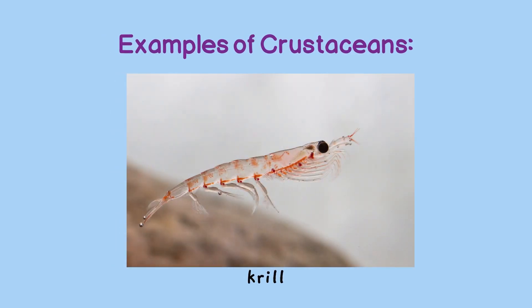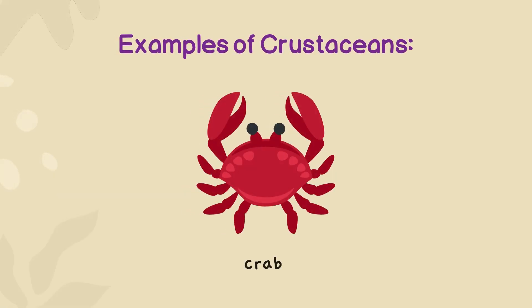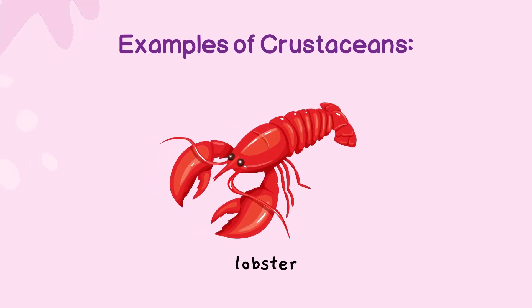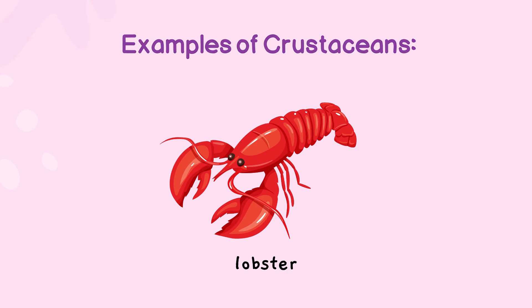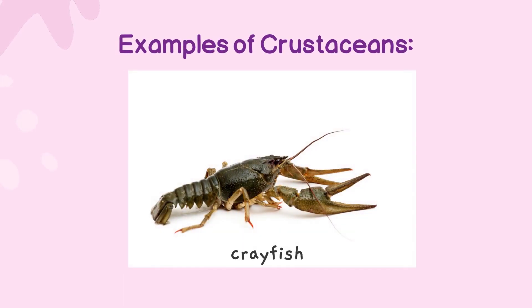Now let's see the examples of crustaceans: krill — krills are very small and transparent — crab, lobster, shrimp, and crayfish.